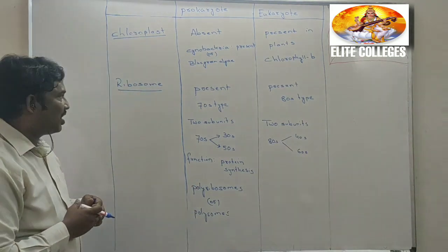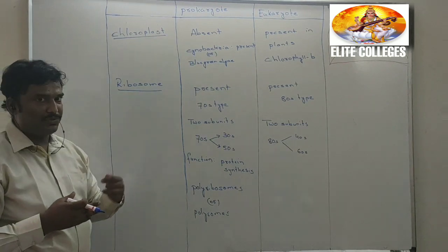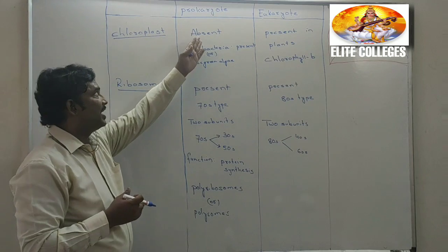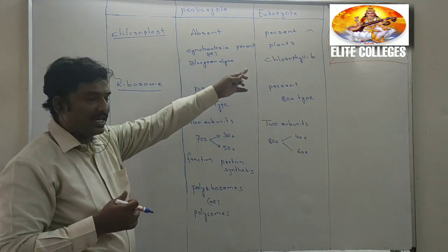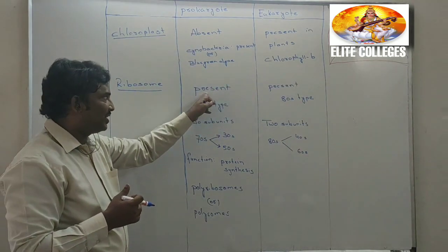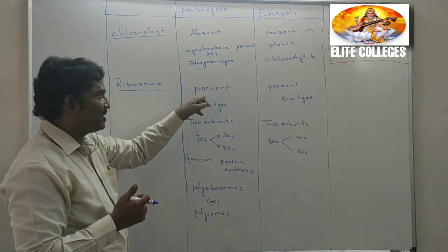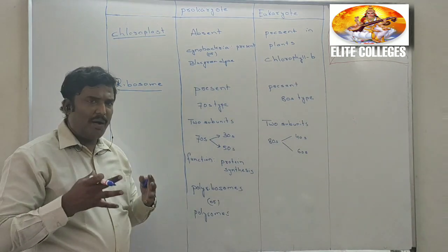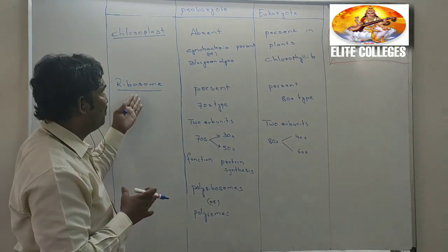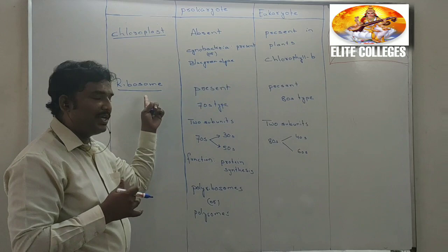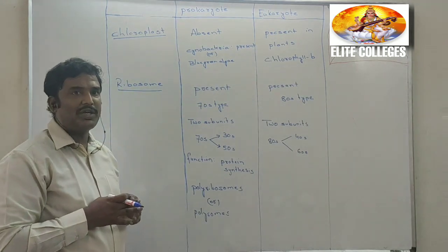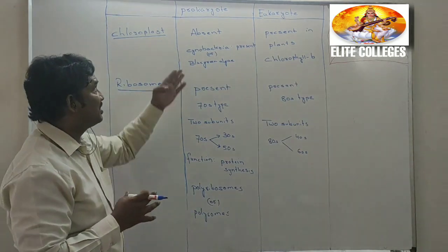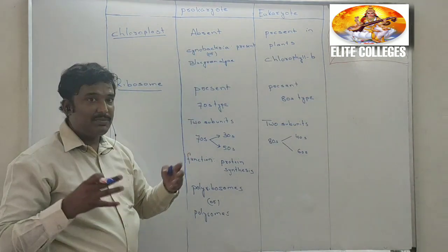Now let us look at ribosomes. Ribosomes are the cytoplasmic components present in both prokaryotes and eukaryotes. The most important thing to remember is that ribosome is the only common component present in both prokaryotes and eukaryotes.